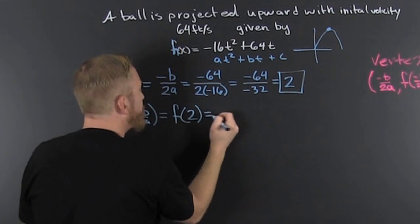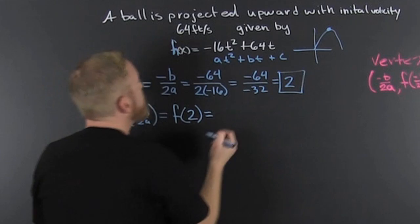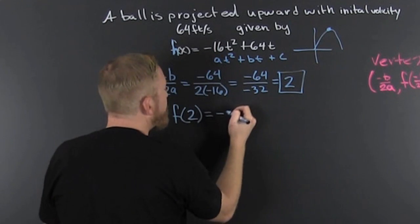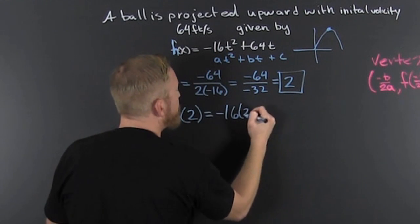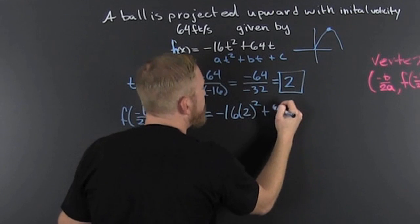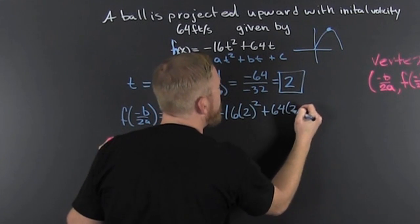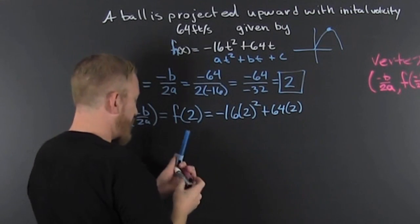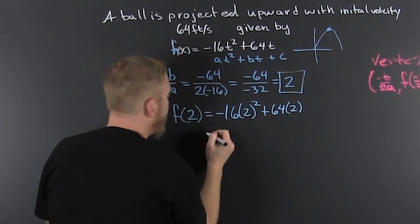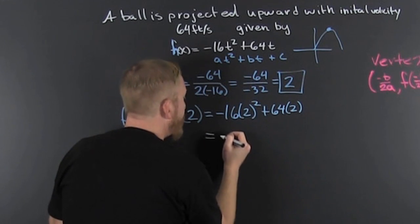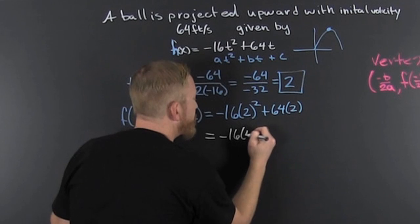We stick 2 in there: minus 16 times 2 squared plus 64 times 2. We gotta see what kind of arm this particular pitcher has. That's minus 16 times 4.